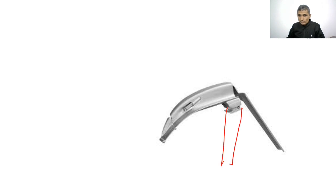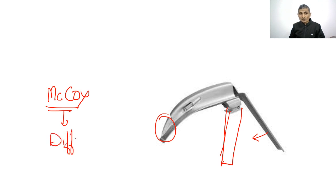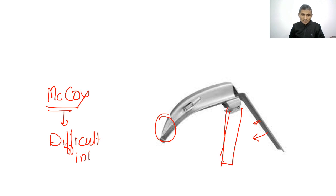Another type of laryngoscope blade is the McCoy blade, which has a movable tip controlled by a lever. When the lever is pressed, the tip lifts the epiglottis. This is used for difficult intubation when you cannot visualize the glottis.